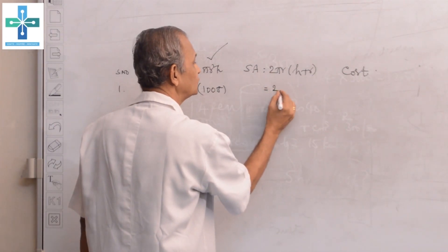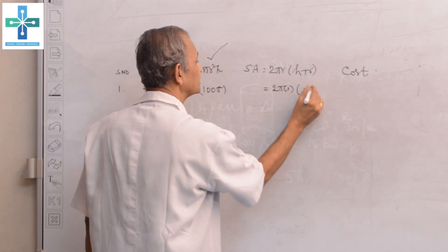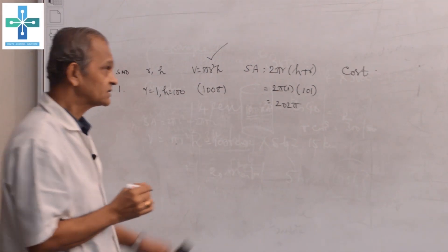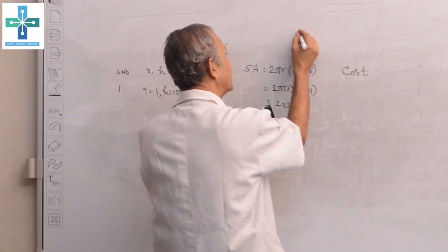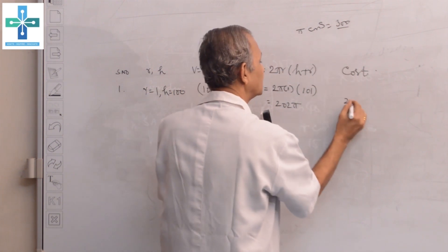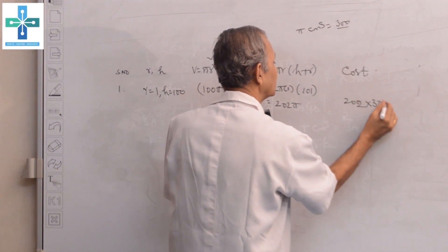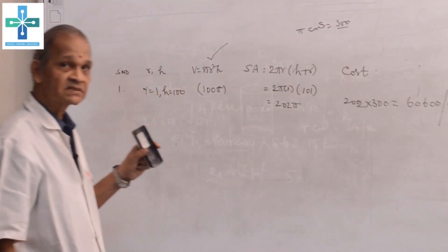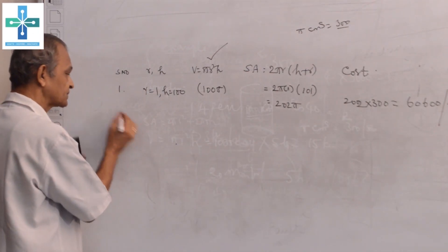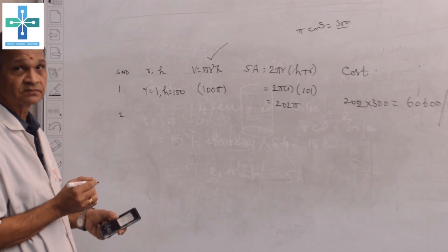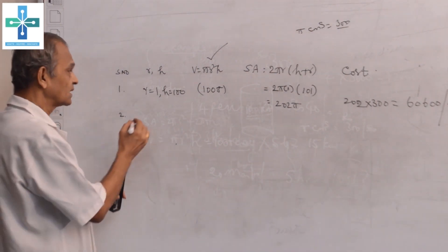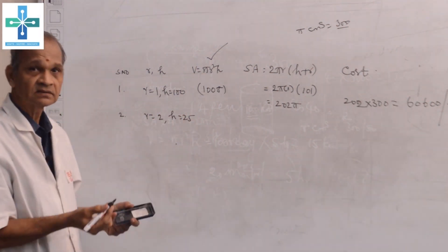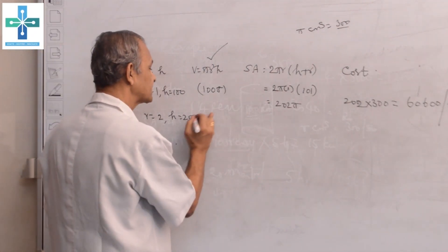The cost will be 202 into 300, which is 60,600 rupees. Suppose if we feel the cost is too much, we want to rearrange this application. Writing r = 2, h = 25. Here will be once again 100π.